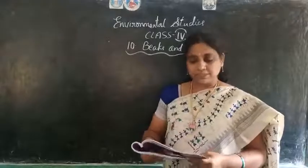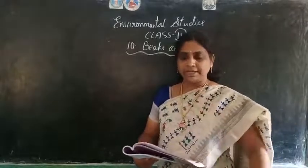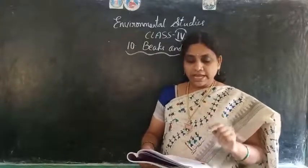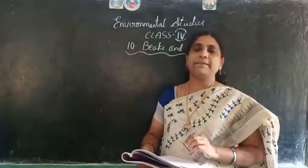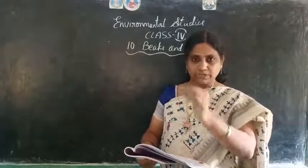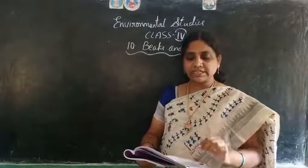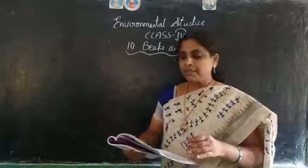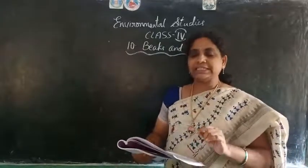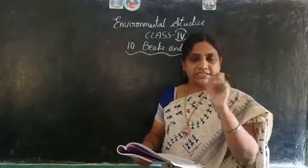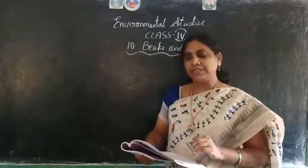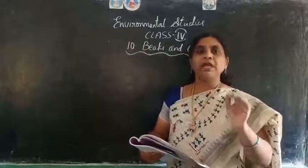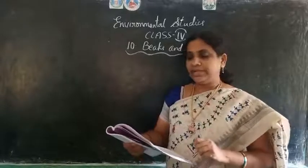The next type is the tweezer beak. These long, pointed beaks are found mainly in insect eaters like the hoopoe and warbler. They are used to pick out and tweeze insects from leaves, twigs and bark.